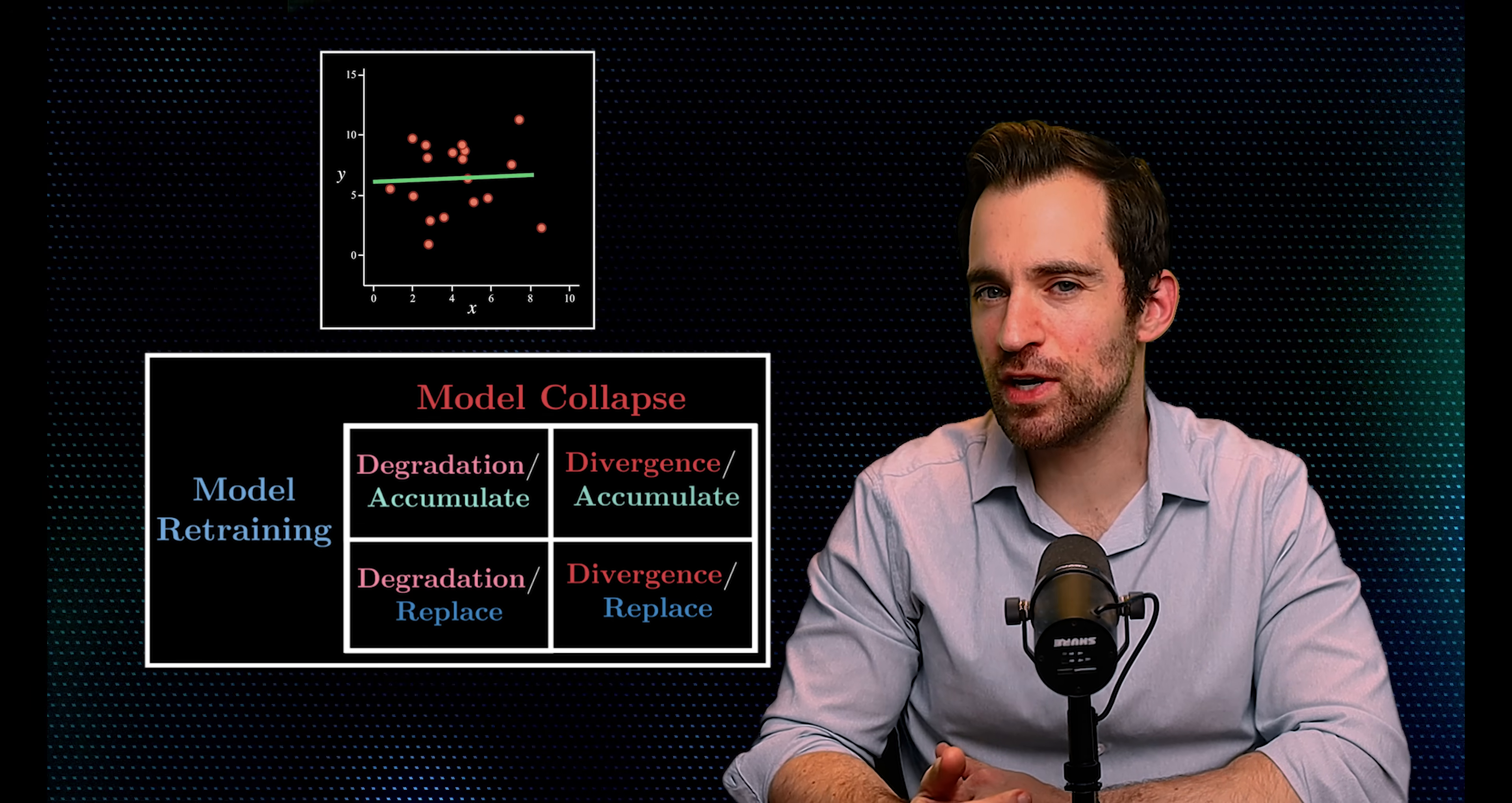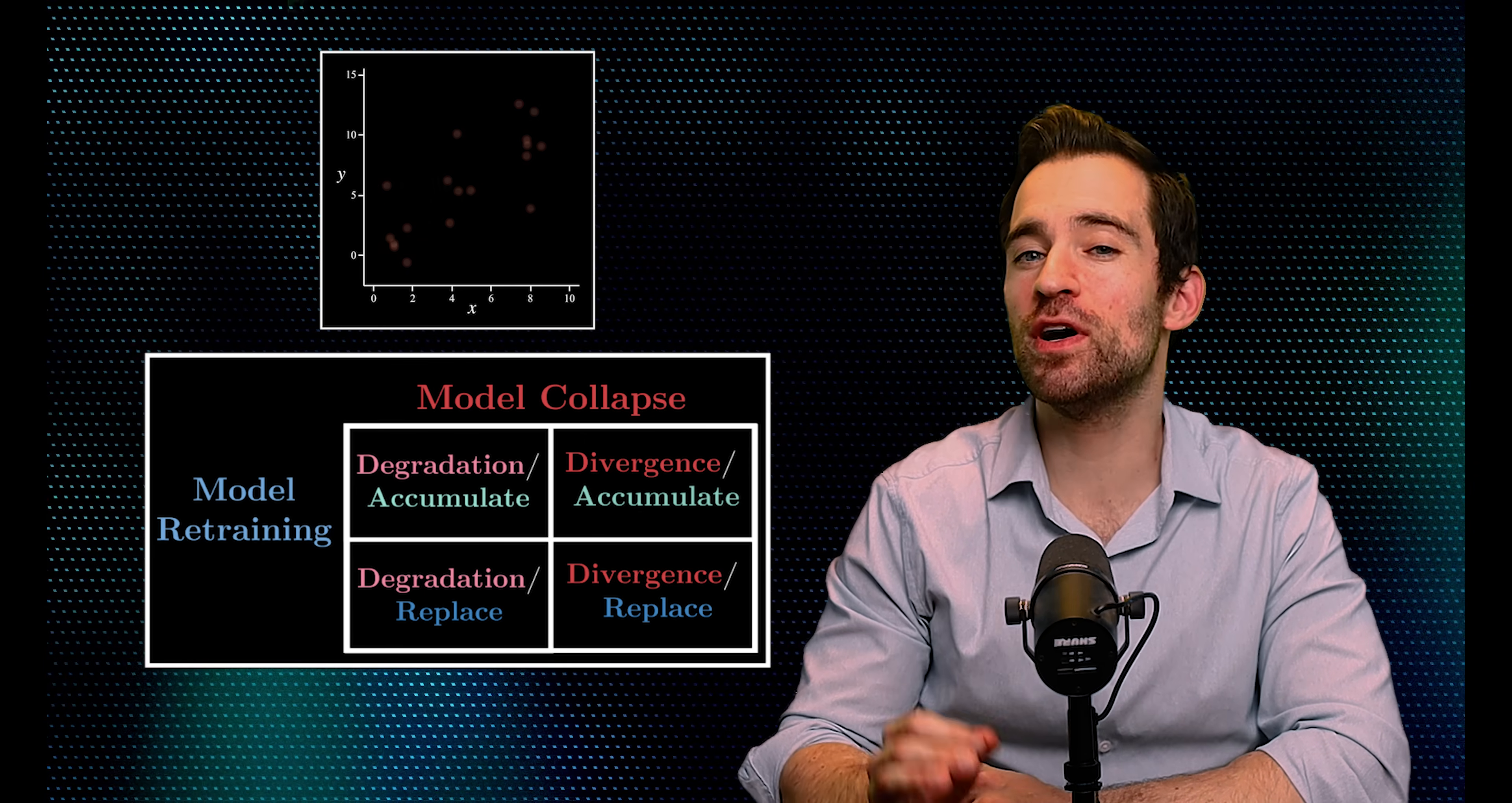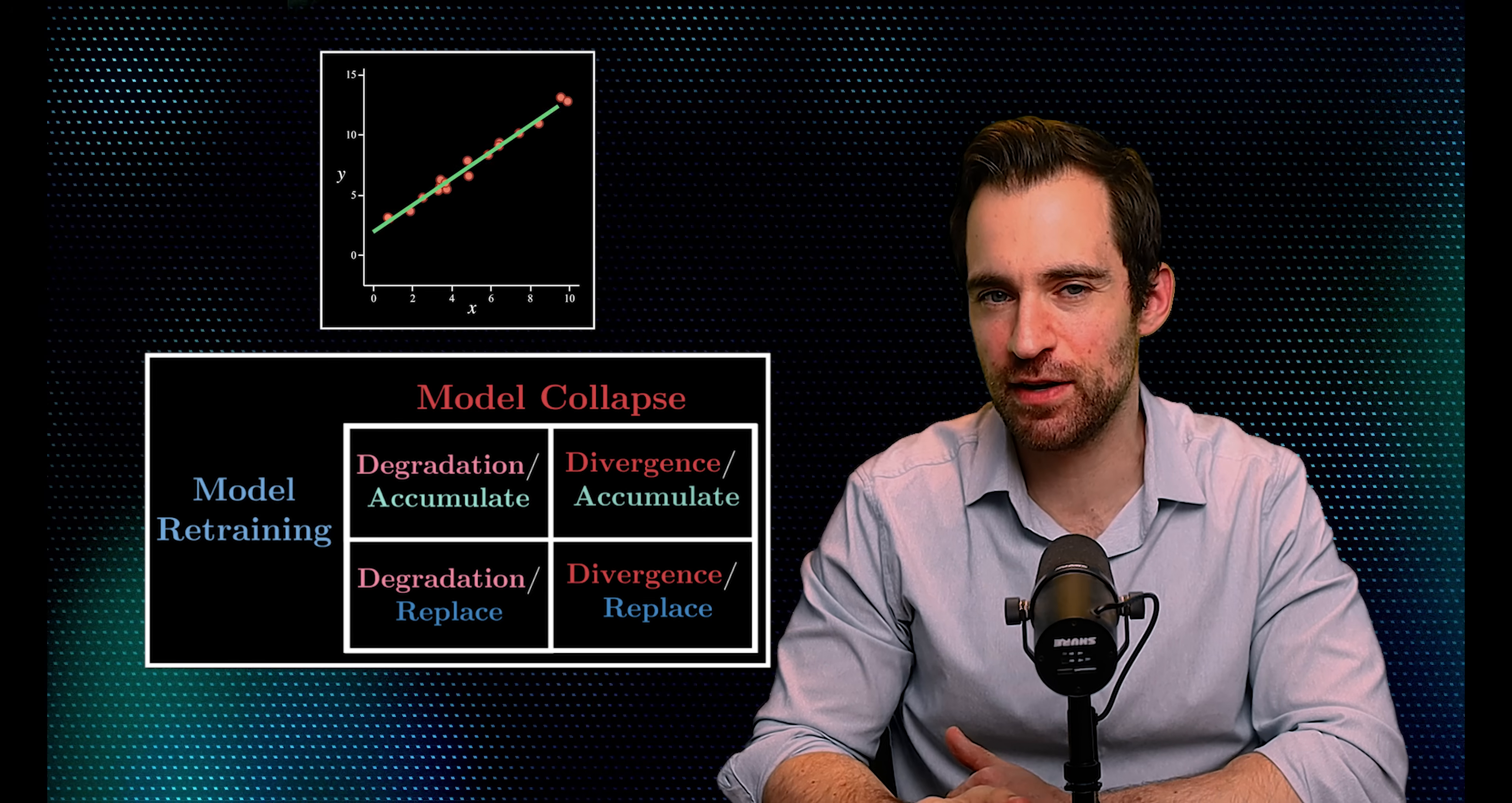Now, as an example, in the linear regression case I showed earlier, we were 100% replacing the training data on each round, and we saw a divergence in model performance. The model became increasingly confident in inaccurate predictions, which is a type of divergence.